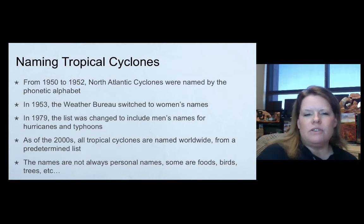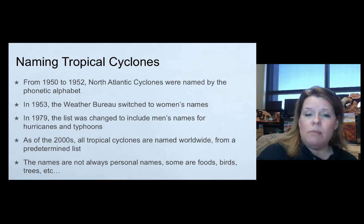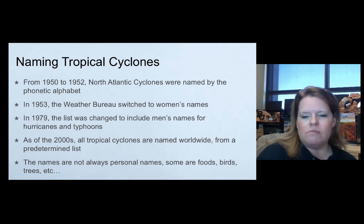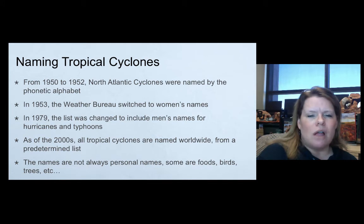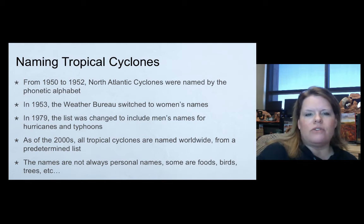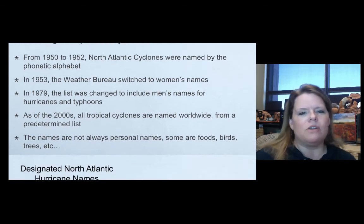From 1950 to 1952, North Atlantic cyclones were named by a phonetic alphabet. In 1953, the Weather Bureau switched to women's names only. In 1979, men's names were added for hurricanes and typhoons. As of the 2000s, all tropical cyclones are named worldwide from a predetermined rotating list used over five or six years. Names aren't always personal names — some are food, birds, or trees — but most are proper names people recognize.